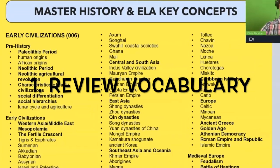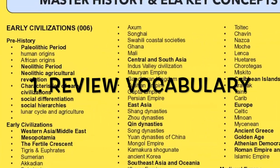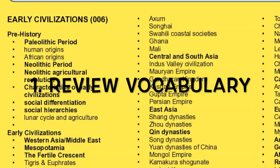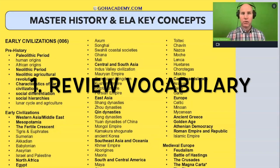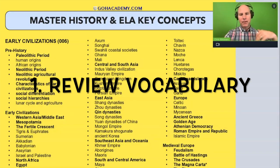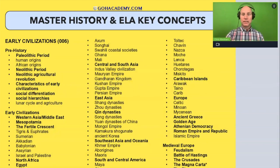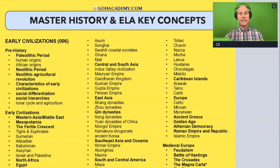Those are good ideas to be clear on so you can answer basic questions. For example, one of the ideas we covered was the Neolithic Agriculture Revolution. By reviewing that one idea, when we came across a question with that concept, we were able to answer it very quickly.